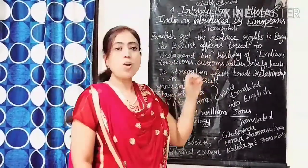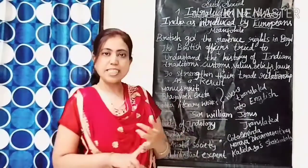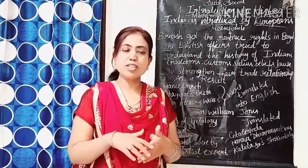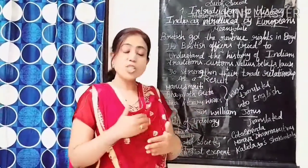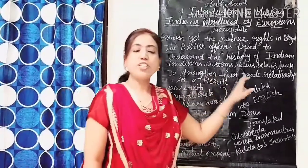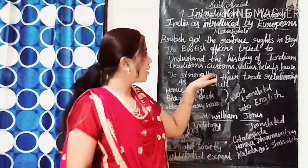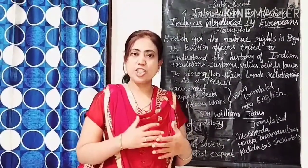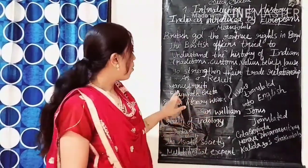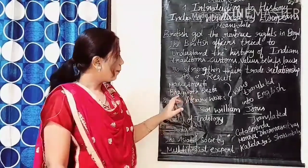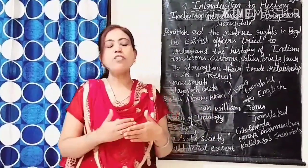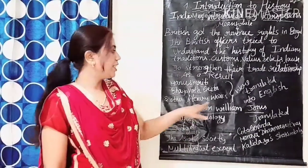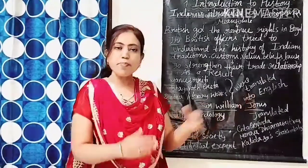The British officers tried to understand the history of Indian traditions, customs, values, beliefs, and laws of Indians. Their aim was to strengthen their trade relationship — if they understood all these aspects of Indians, then they could make a good relationship with them. Some administrators were also attracted towards Indian culture and traditions. As a result, texts like Manusmriti, a Hindu law text, and the Bhagavad Gita — a conversation between Arjuna and Lord Krishna before the Kurukshetra war — and other great literary works were translated from Sanskrit into English.